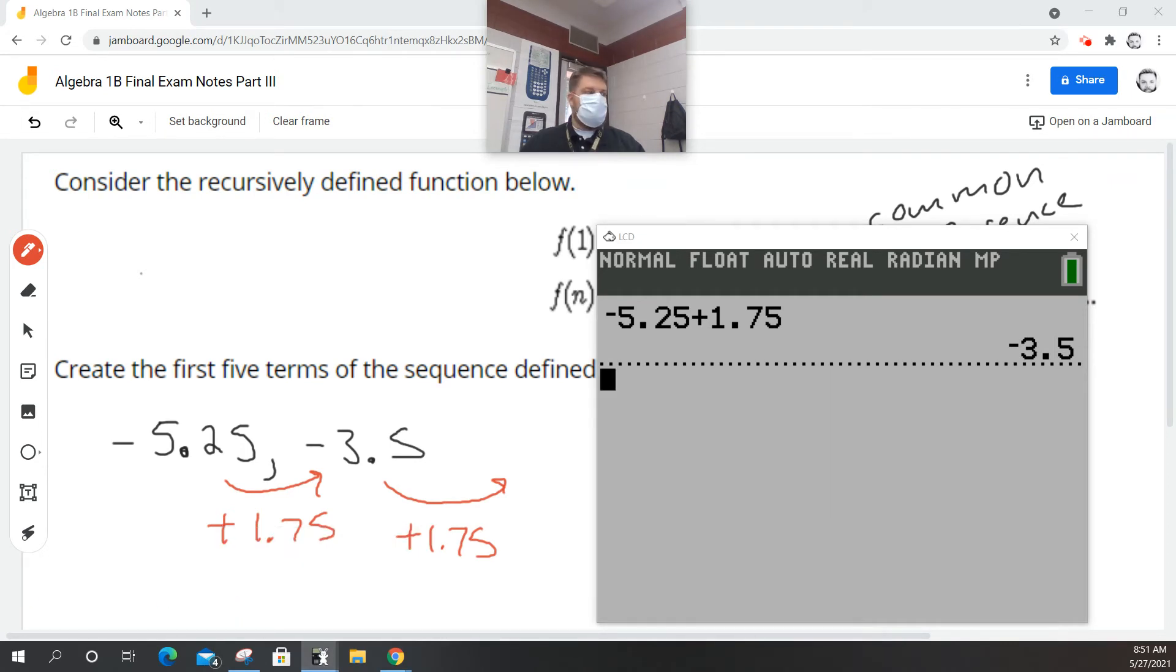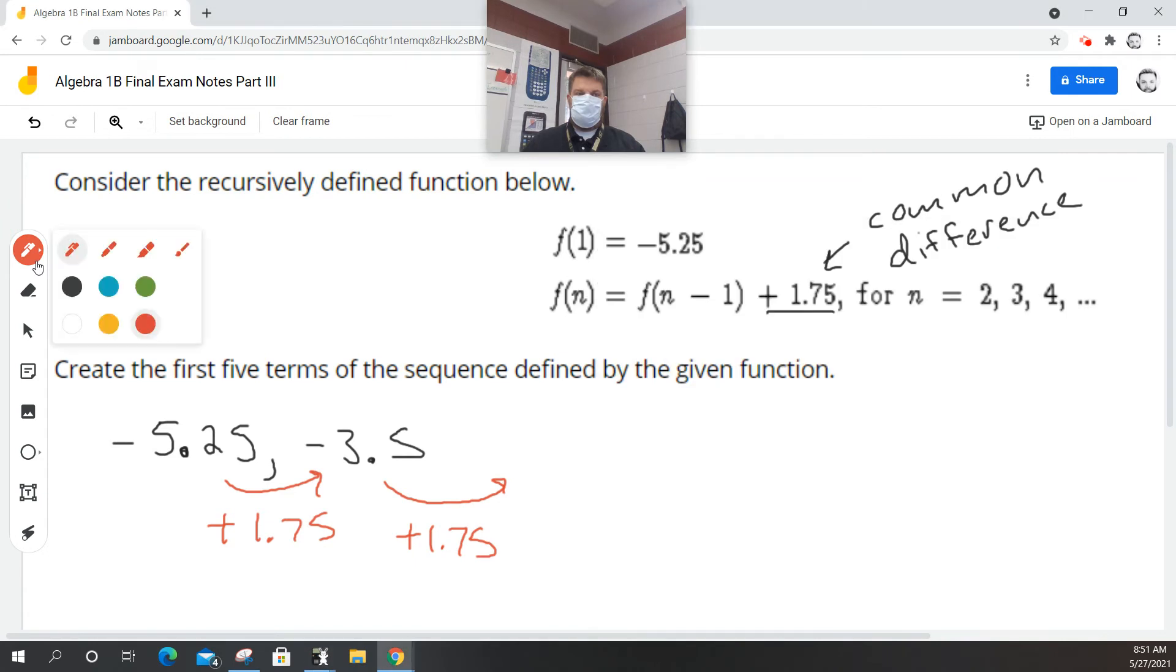So I'm simply going to, if I hit add 1.75, it's going to add that to the last answer I had, which gives me negative 1.75.